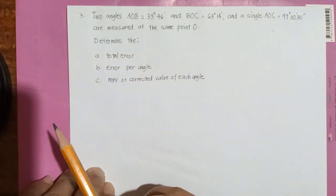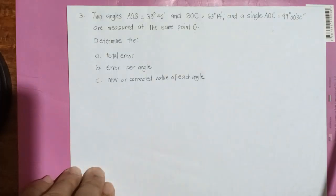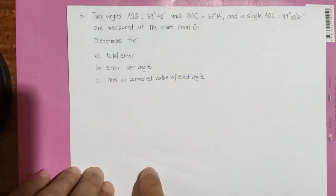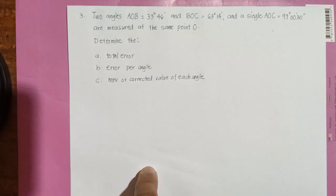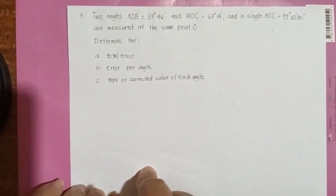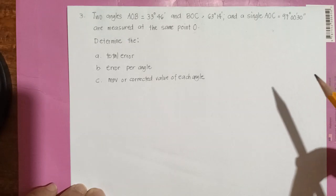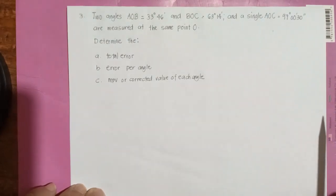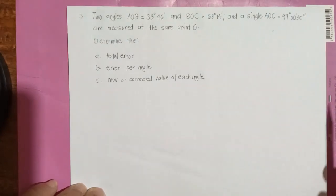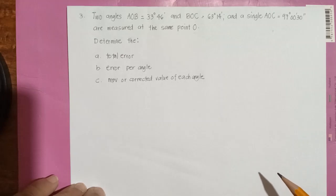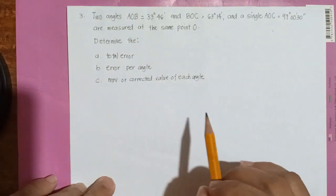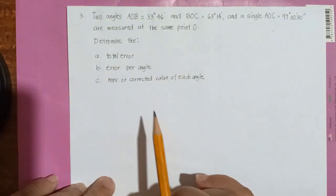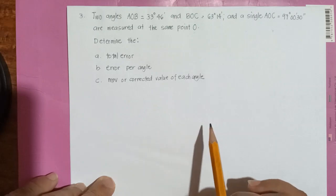So how are we going to determine the most probable value of redundant measurements? This is what we call redundant measurement. Before solving a problem, it's better to make a sketch.